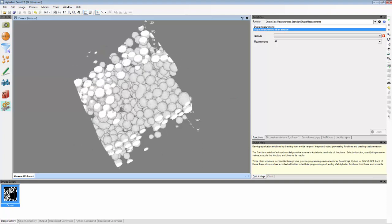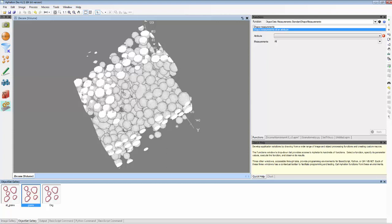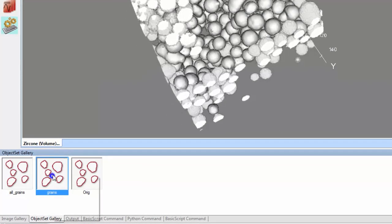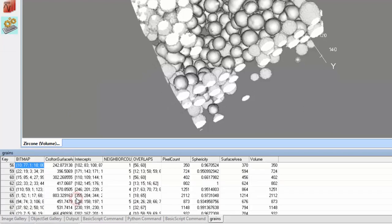The Aphelion macro creates an object set that can also be displayed by dragging it into the visualization window. The measured results can be viewed in tabular form.